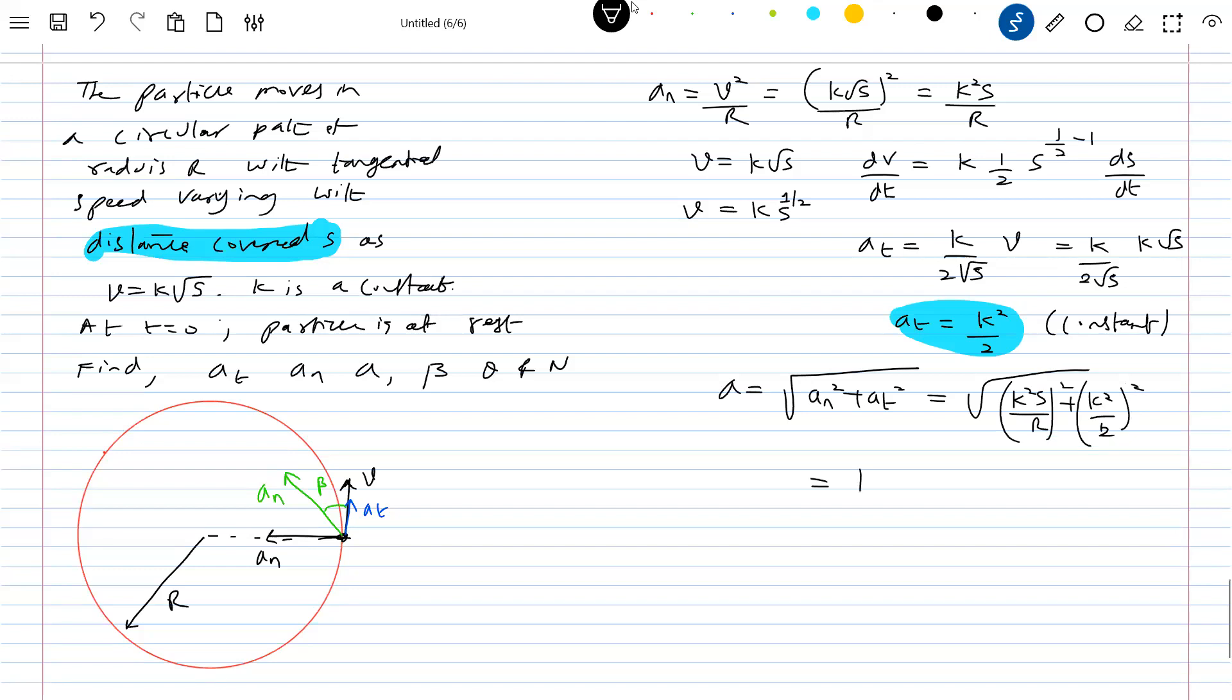So K square will come outside. S square by R square plus 1 by 4. So with the time, what happened? The distance covered. What do you mean by distance covered? This one, the distance covered. Sir, how do you measure distance covered? I have to show that also. The distance covered will be...